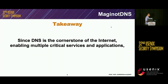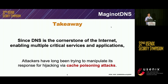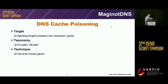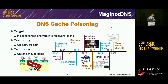Since DNS is the cornerstone of the Internet, underpinning multiple services and applications, attackers have long been trying to manipulate its responses for hijacking via DNS cache poisoning. Since DNS primarily uses UDP, attackers want to inject forged answers into the resolver cache. There are mainly two ways to do this: on-path attackers can observe the network link and return forged answers directly, while off-path attackers have to guess the identification fields including the source port and the TXID.